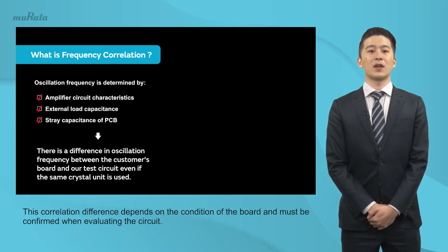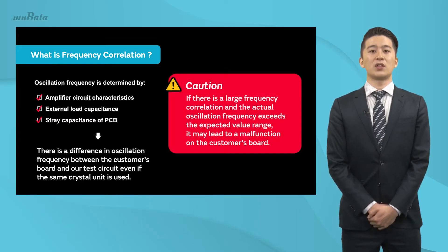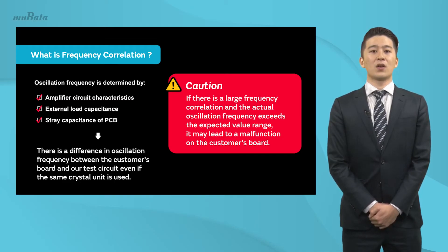This correlation difference depends on the condition of the board and must be confirmed when evaluating the circuit. If there is a large frequency correlation and the actual oscillation frequency exceeds the expected value range, it may lead to a malfunction on the customer's board.